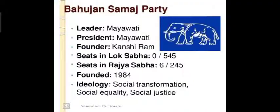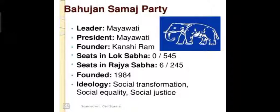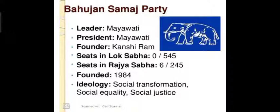The leader of the Bahujan Samaj Party right now is Mayawati — she is also the president of the party. The party was founded by Kanshi Ram, who is sometimes called the guru of Mayawati. In the Lok Sabha election they got 9 seats out of 545, and in the Rajya Sabha 6 out of 245. This party was founded in 1984.